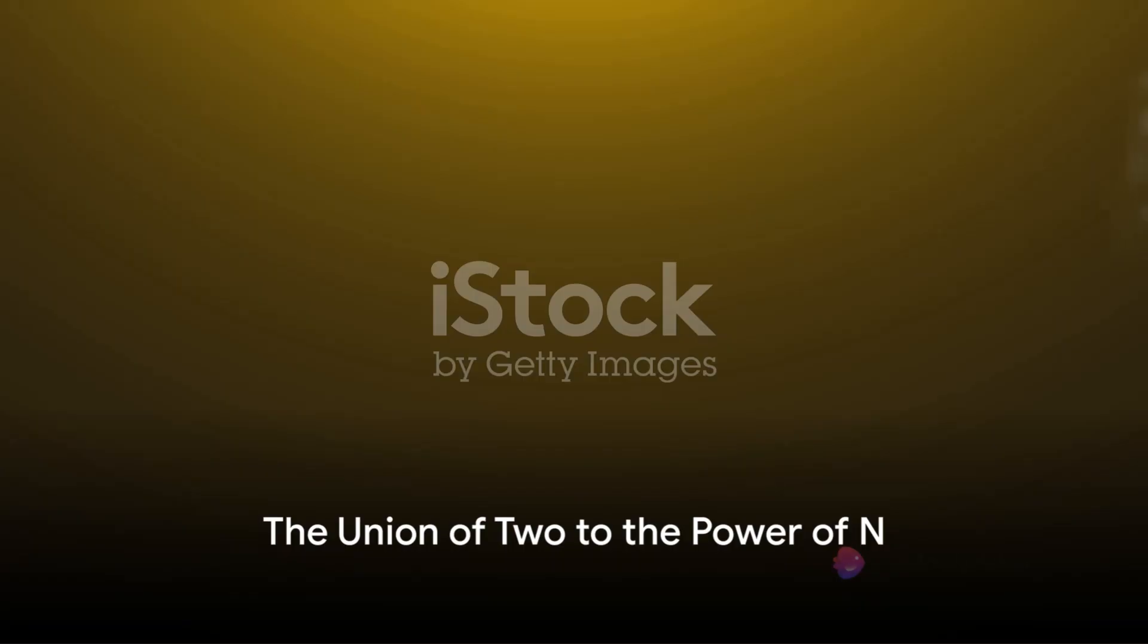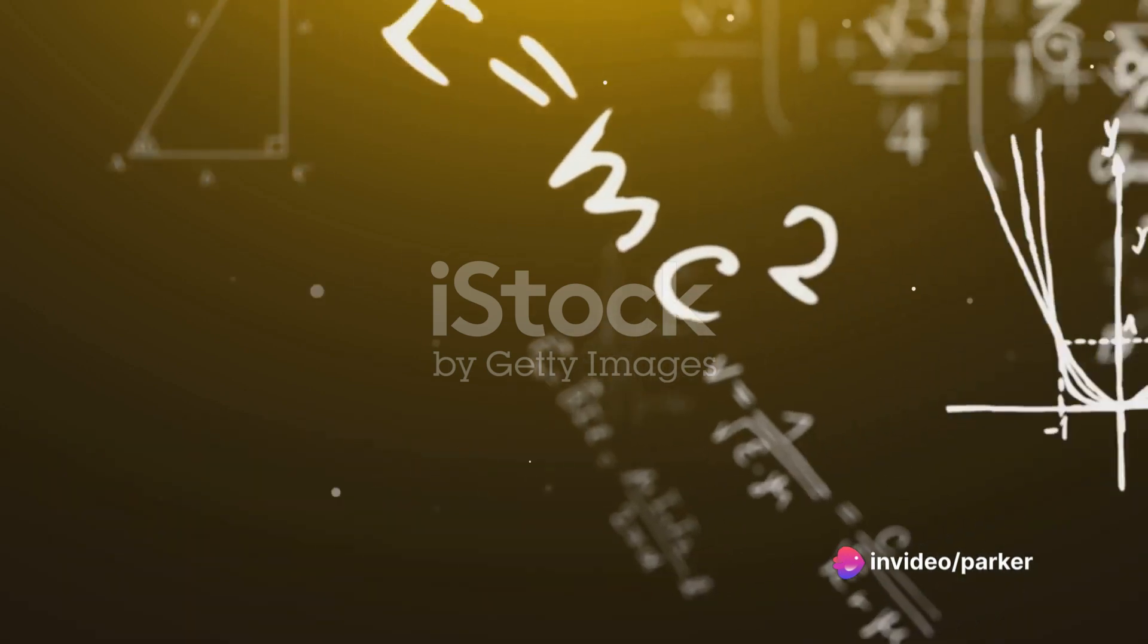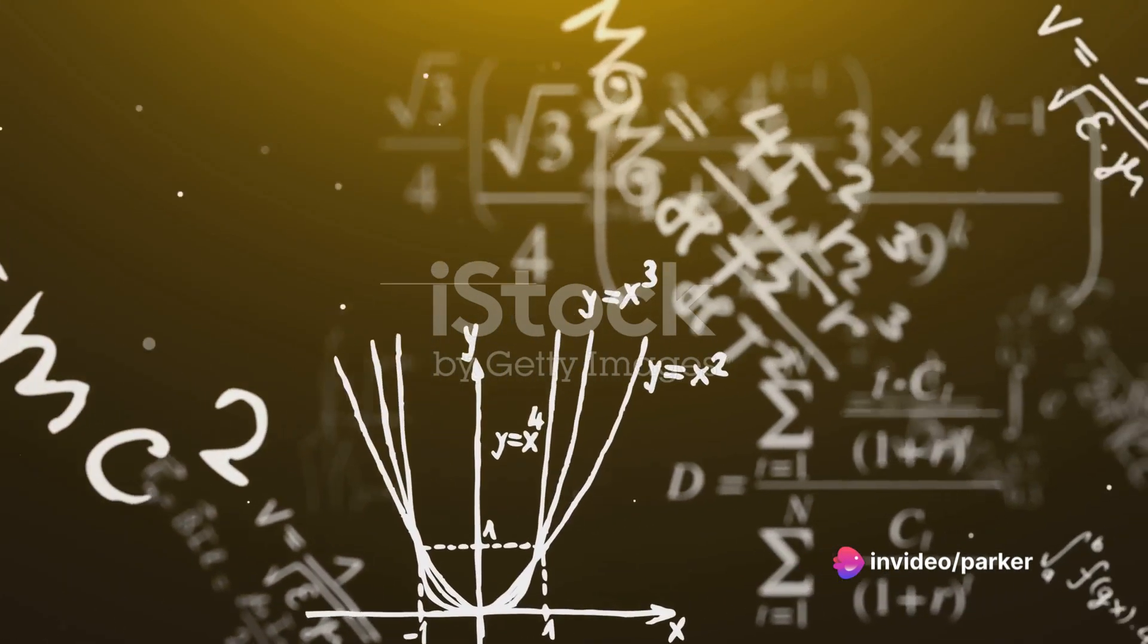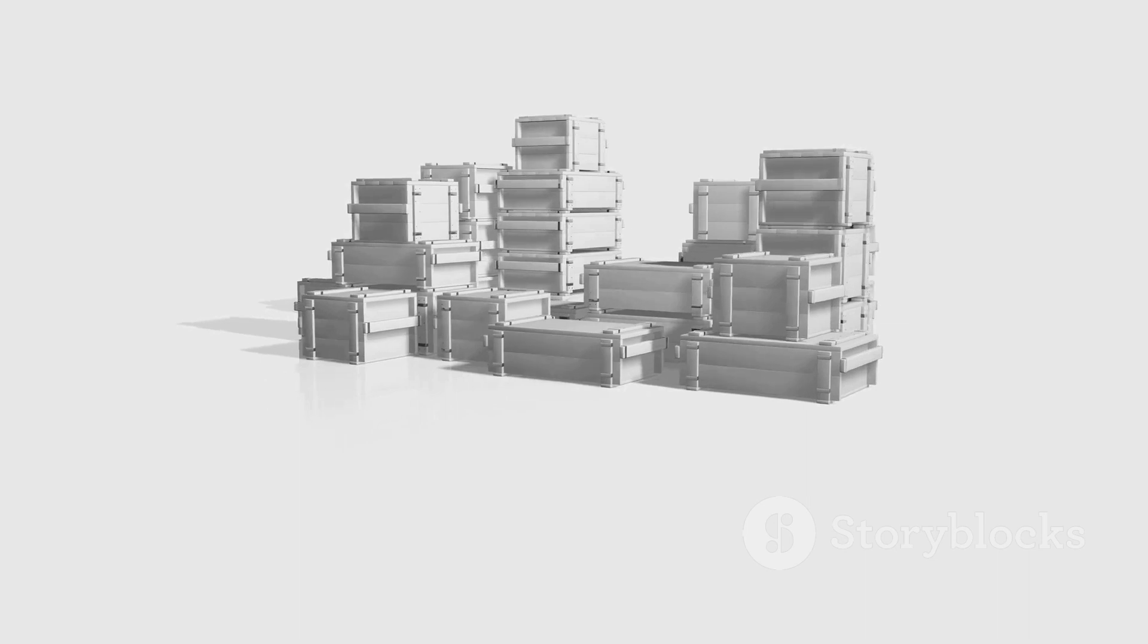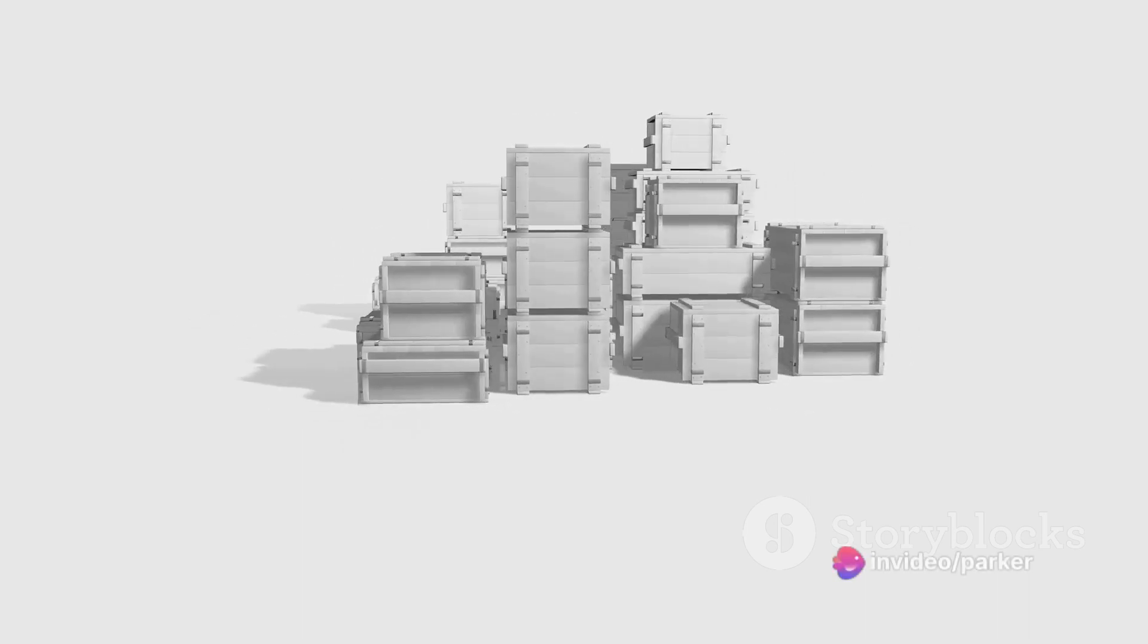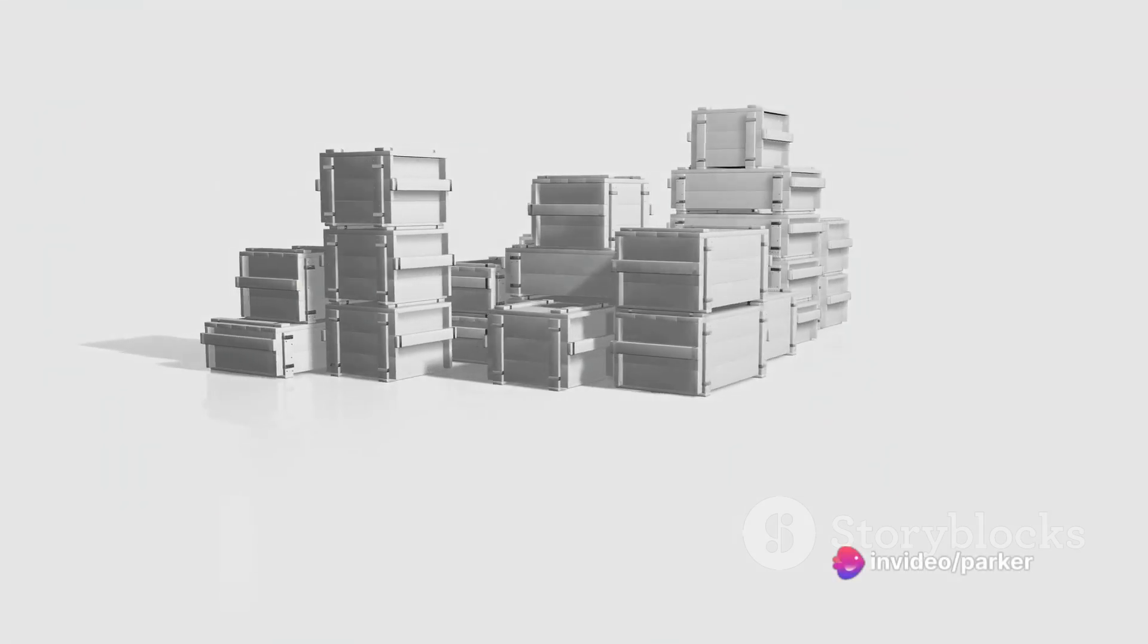Imagine a sum, represented by a union of two to the power of n, brought together by the circle operator. This sum is multiplied by three times n plus i, all cubed. It's like adding together a series of boxes, each one larger than the last, and each one containing a number that's been manipulated in a specific way.